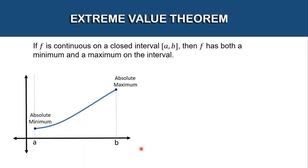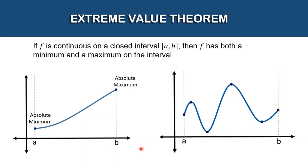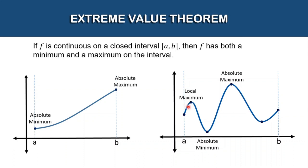Let's consider another graph. Where is the absolute maximum on this graph? On this graph, this point is the highest — this is the absolute maximum. And the points that are the lowest is this — and this is the absolute minimum. This part here is called the local maximum, and this part is called the local minimum.